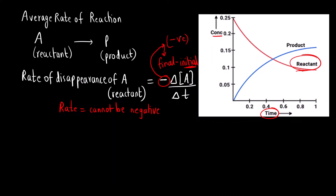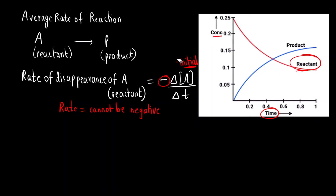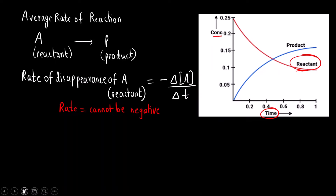So we multiply it by a negative sign, making negative into negative become positive. This is the reason why we multiply the rate of disappearance of the reactant by a negative sign.